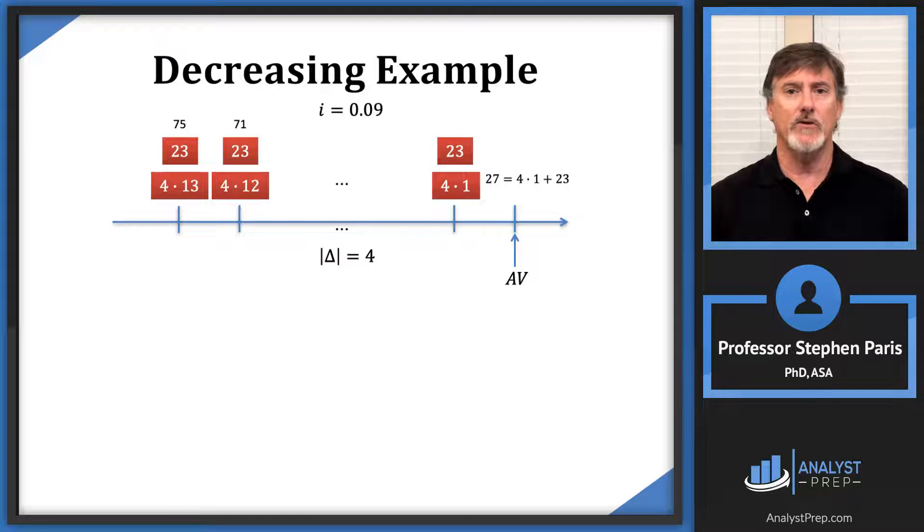So I get what those values are. The reason I do that is because now it's very easy to symbolically represent the accumulated value of this annuity. I just use—first I value the level payments of 23, and I see there are 13 of those. You can see there are 13 payments of 23 that I'm valuing one period after the last payment.